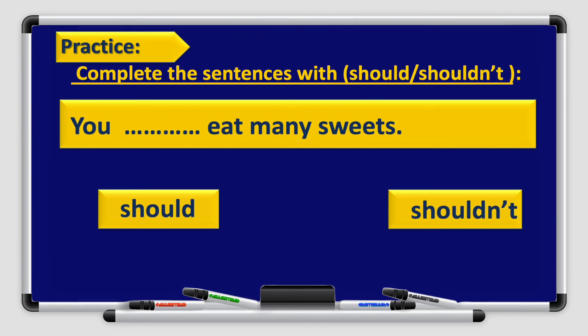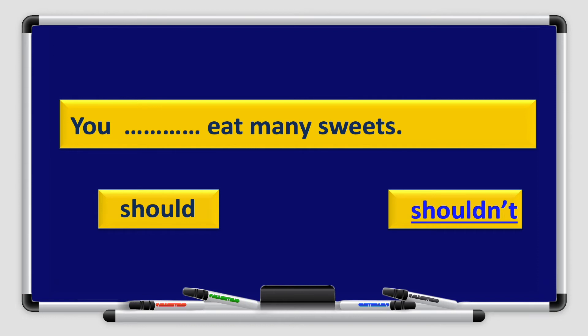Now let's practice. Complete the sentences with should or shouldn't. Number one: 'You ___ eat many sweets.' Should you eat many sweets, or shouldn't you eat many sweets? That's right — the answer is shouldn't. 'You shouldn't eat many sweets' because it is bad for your teeth and bad for your health. Number two: 'You ___ help old people.' The answer is should — 'You should help old people.' Remember, after should the verb comes in the infinitive form.